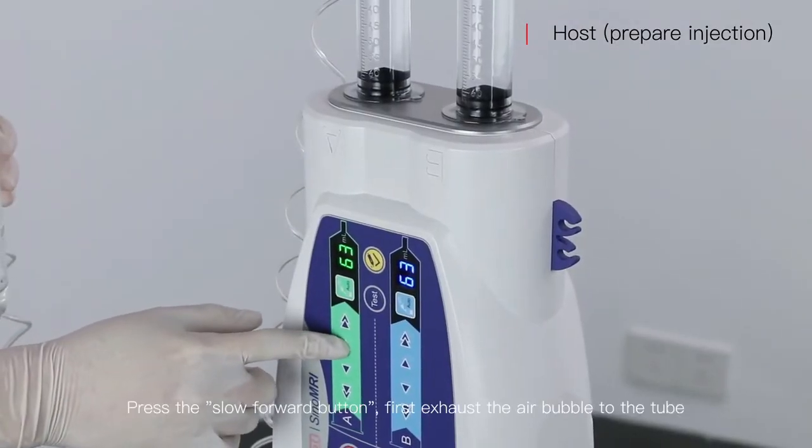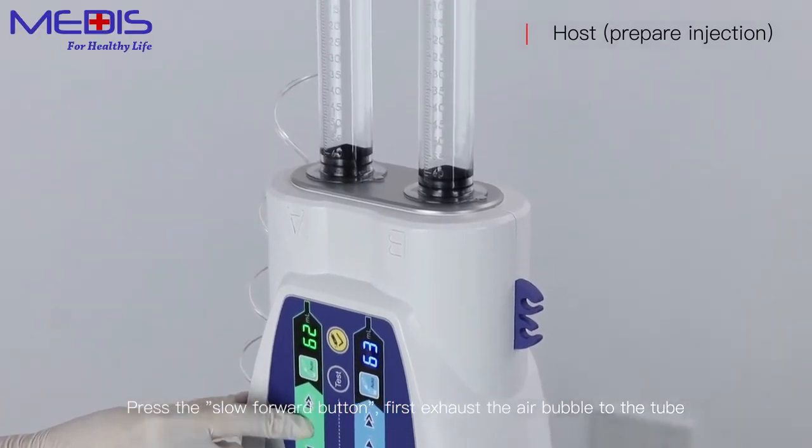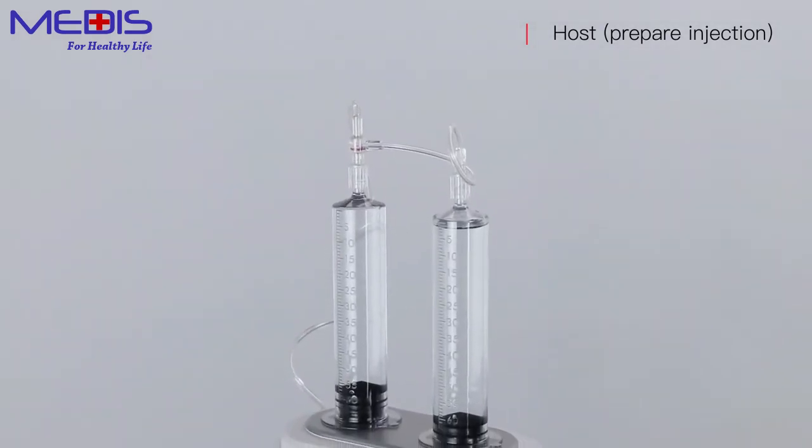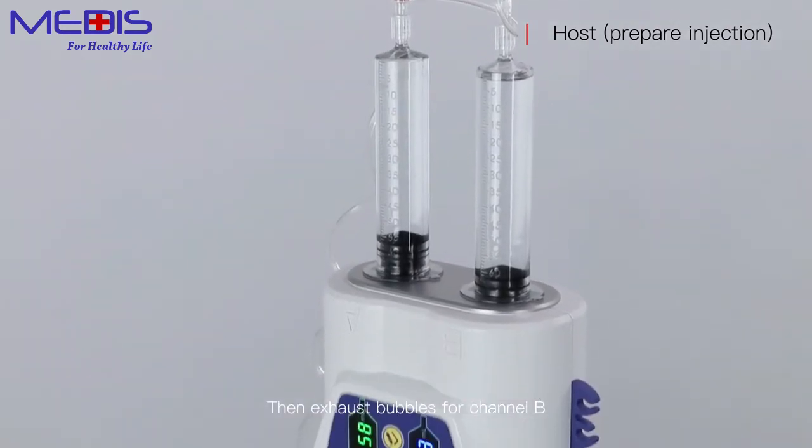Press the slow forward button first to exhaust the air bubbles to the tube. Then exhaust the bubbles for channel B.